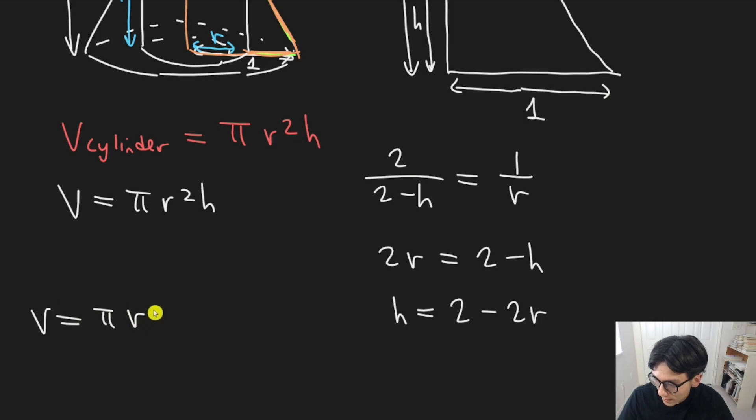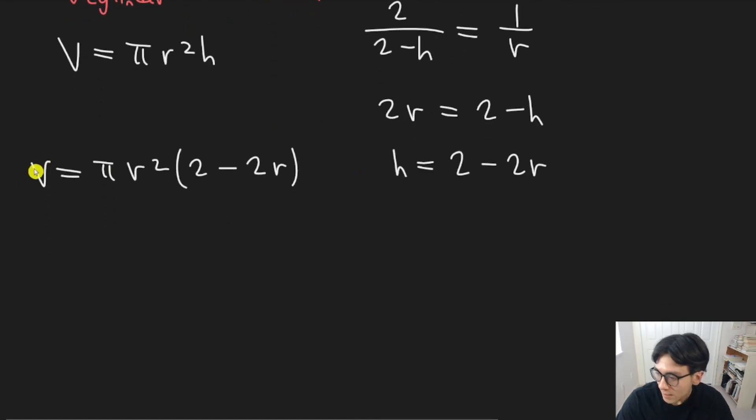So I'm going to have pi r squared times two minus two r. From here, remember the goal is to optimize v. So we want to take the derivative of the right-hand side and figure out the radius that would make this maximum.